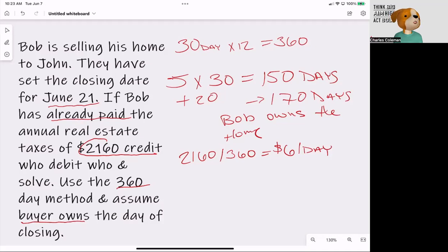So the third thing that we need to do is that we go through here and calculate how much the buyer will owe the seller. So how much will John owe Bob? Because Bob paid for this entire thing up front. So, right, because he paid in advance. So one of the things that we're going to do now is we're going to take 360 and subtract that from 170 days.